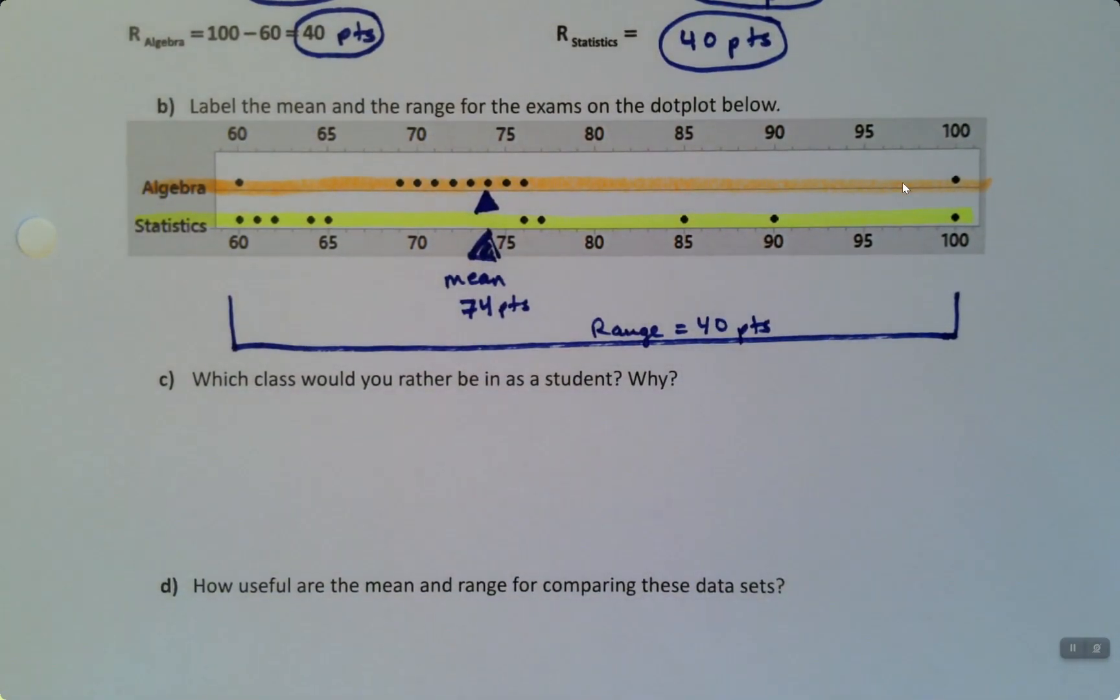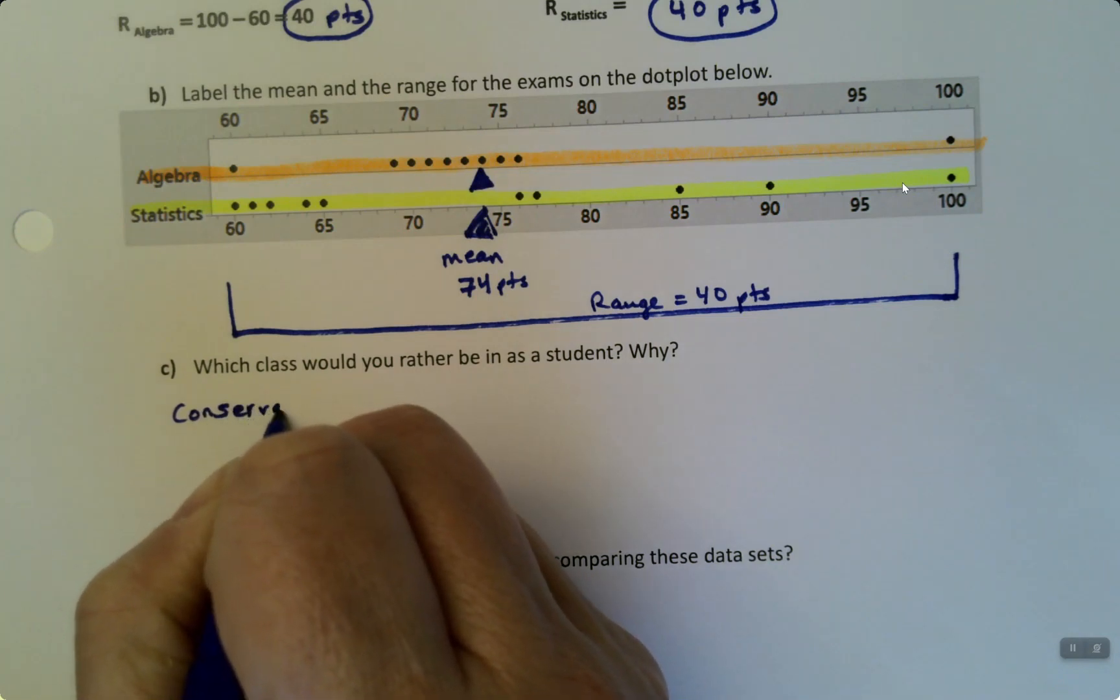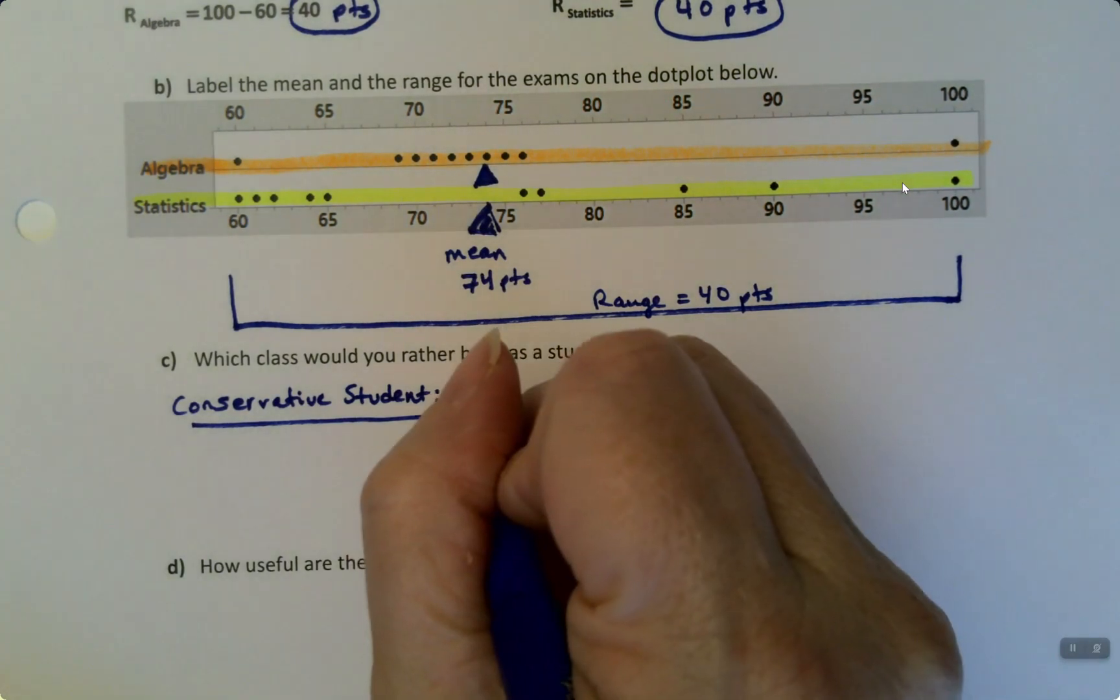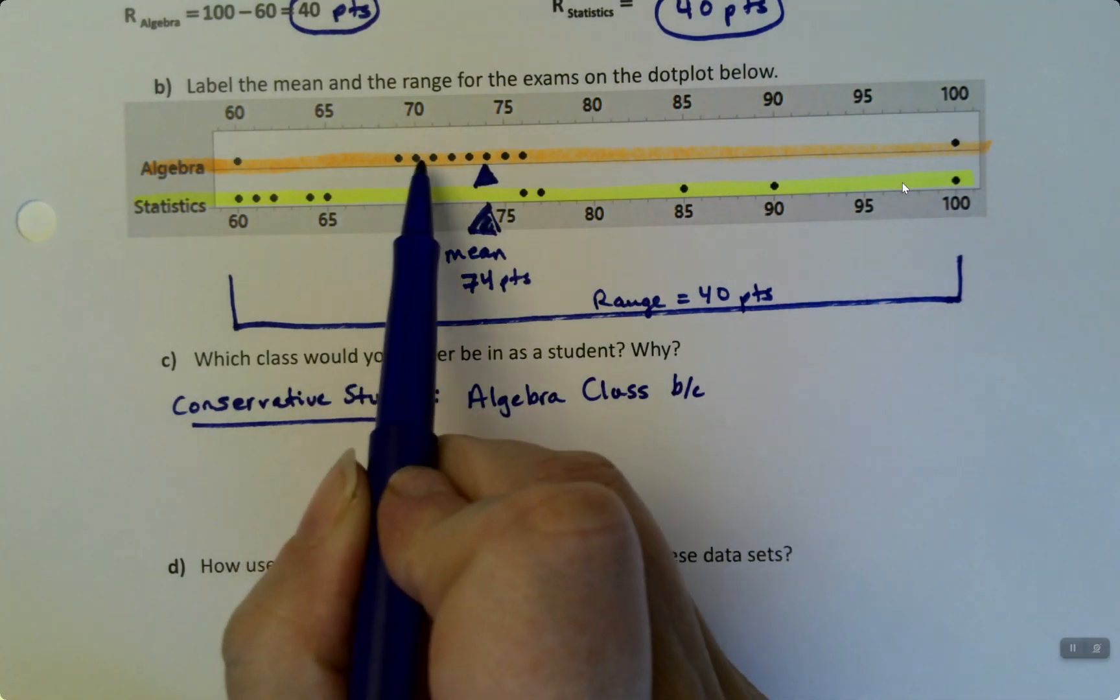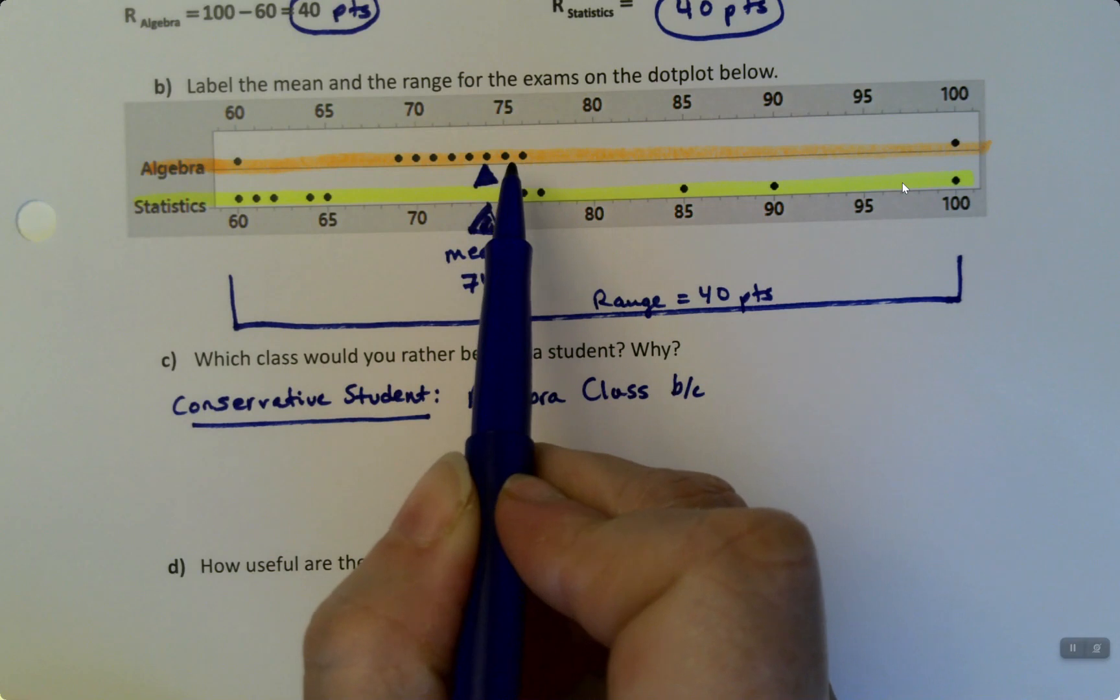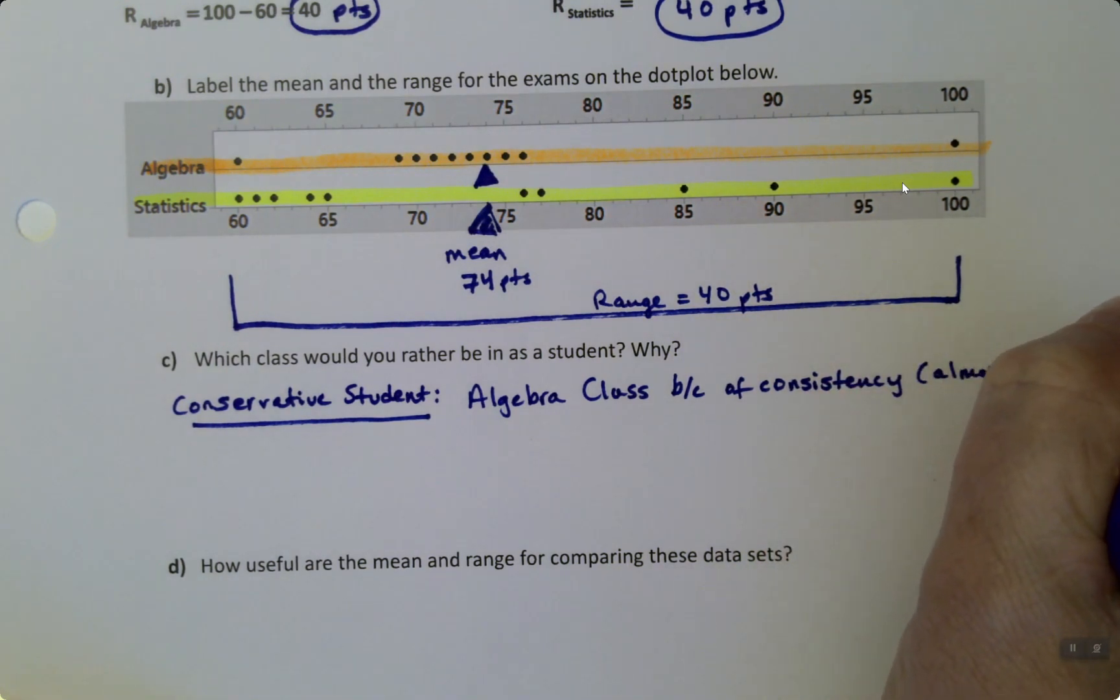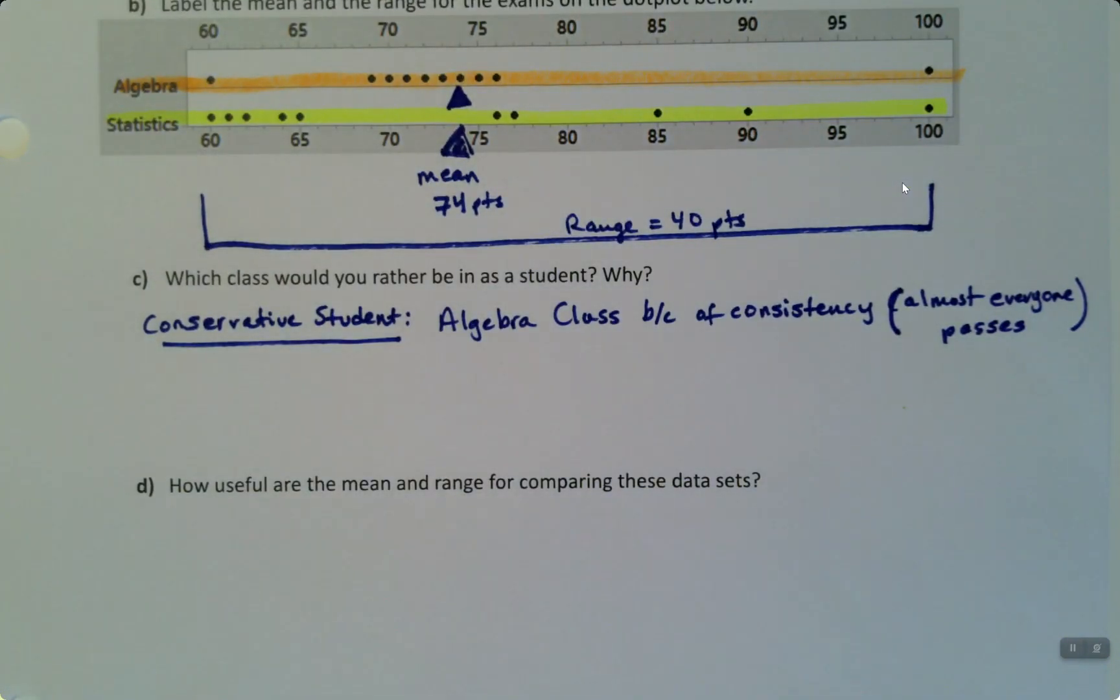All right. So now the question comes, which class would you rather be a student in and why? And I actually get a couple different answers from this usually in a class. So there are some students that want to be in the algebra class, and there are some students that want to be in the statistics class. So a conservative student, meaning a student that doesn't want to take risks, a student that wants to be sure that they pass, that's all they want is to pass, is more likely to choose the algebra class. Because look at these scores, almost everybody passed. It has a lot of consistency. Almost everybody passes. And by the way, these are not real numbers. I made these up. This is not a real data set at all. But it's illustrative of things that do happen in real data sets.